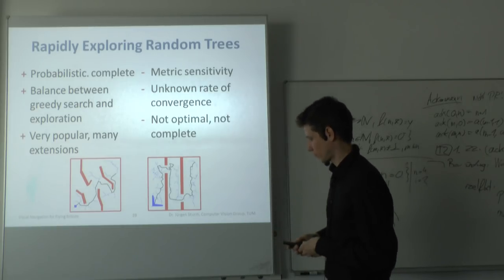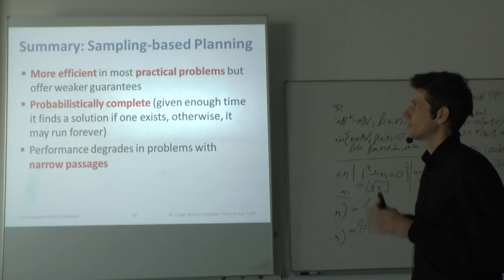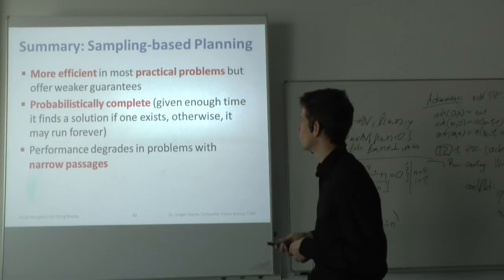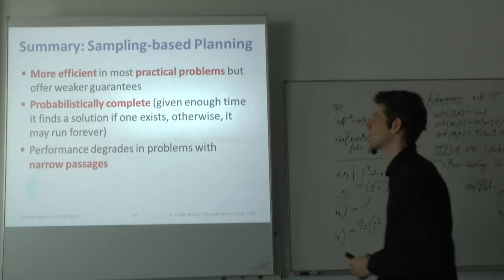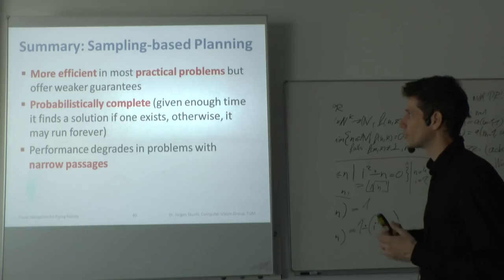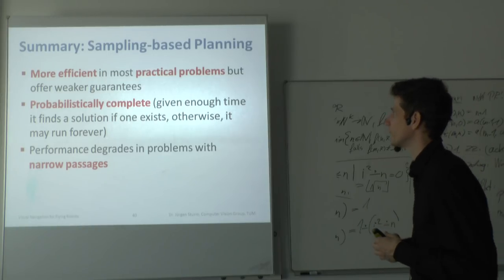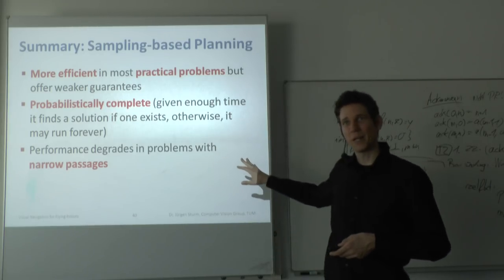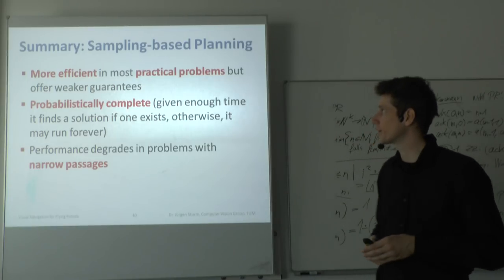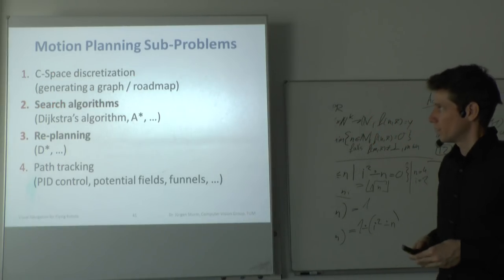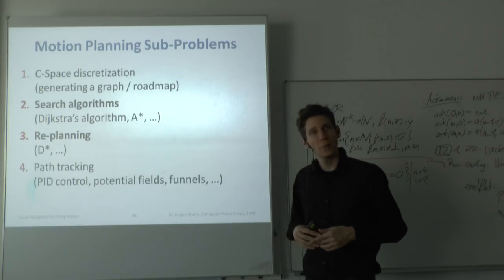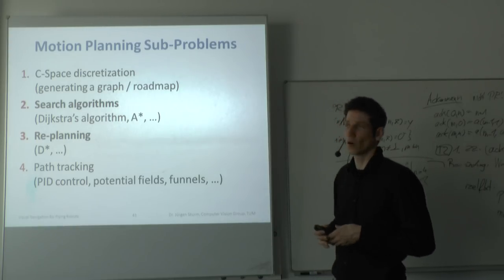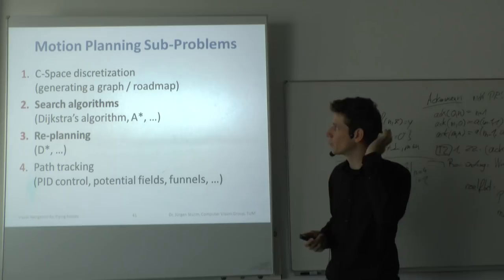RRTs have similar properties to roadmaps — they are also probabilistically complete. You can steer the sampling direction, balancing between a greedy search toward the goal or pure exploration in all directions, depending on how much free space and obstacles you have. RRTs are extremely popular, especially for autonomous cars. They are not optimal and not complete.